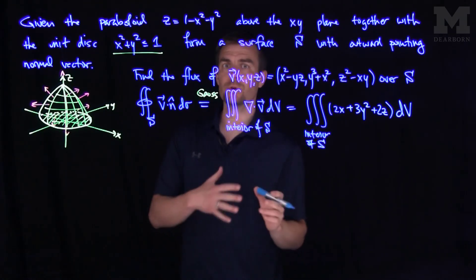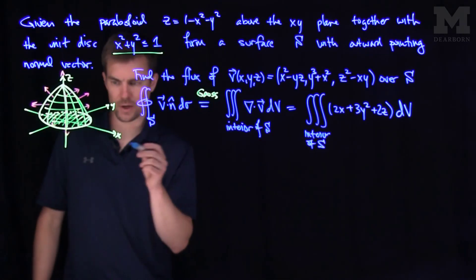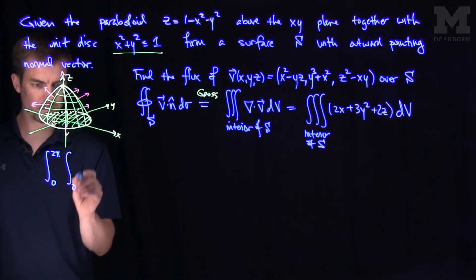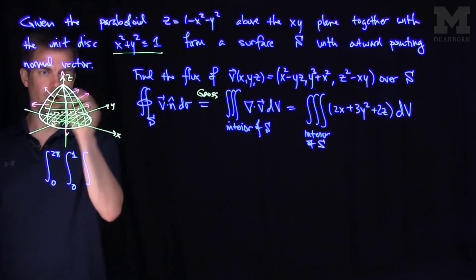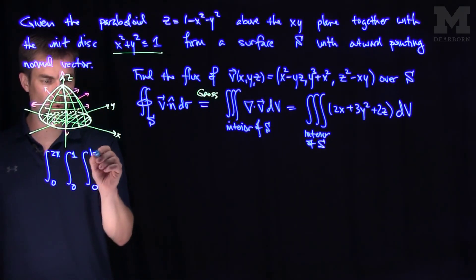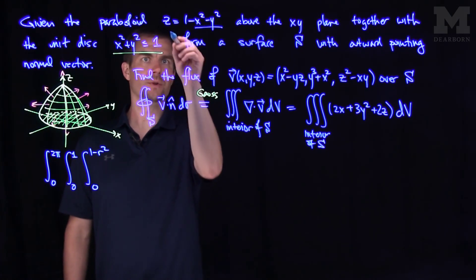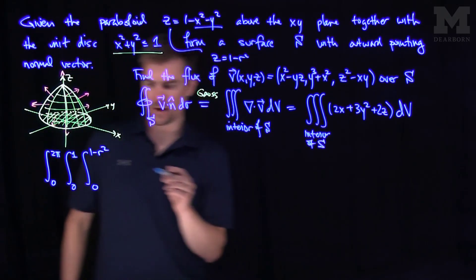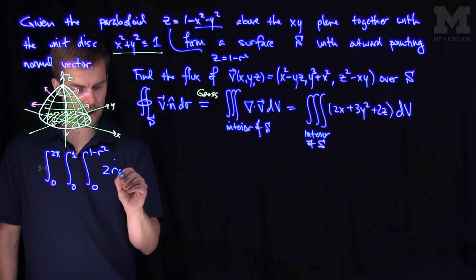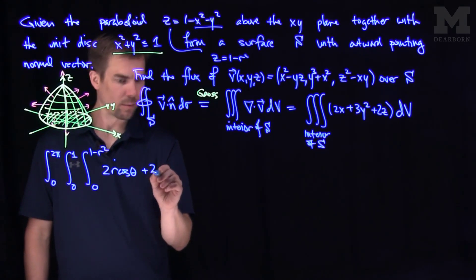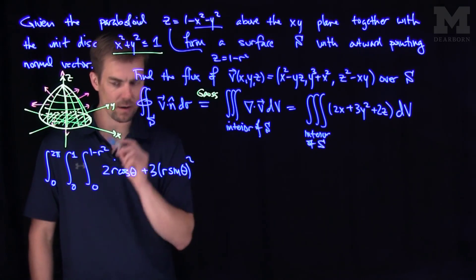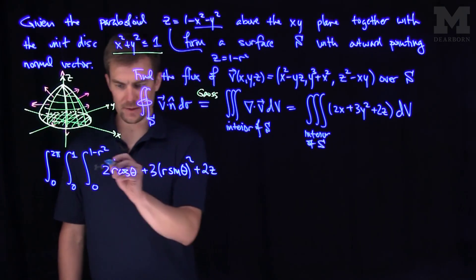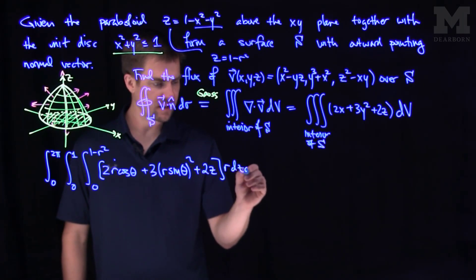Now we'll put this into cylindrical coordinates. In cylindrical coordinates, this region has theta going between 0 and 2pi, r going between 0 and 1, and z going between 0 and the surface, which is 1 minus r squared, because x squared plus y squared equals r squared. So the surface is z equals 1 minus r squared. We replace x with r cosine theta and y with r sine theta, and z is just z, giving us r dz dr d theta.